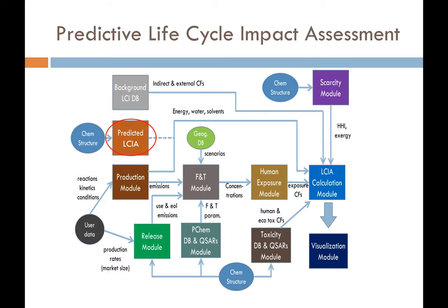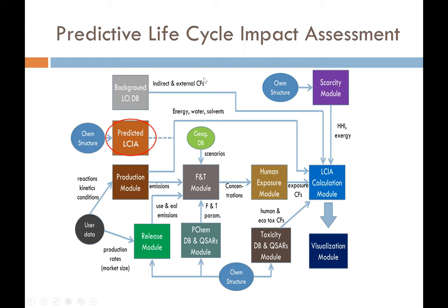The reason for this module is simple: some modules in CLICK require very specific input from users, and in some cases that information is hard to get or confidential. So we need an alternative pathway to estimate the final life cycle impact without running through the detail of other modules. We want to predict the final characterized result — for example, global warming potential or human health endpoint — based on very simple input, providing results with accessible accuracy.